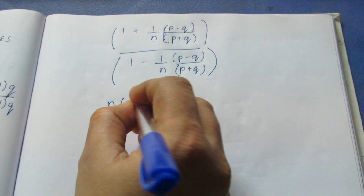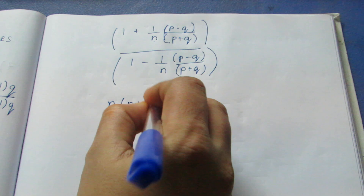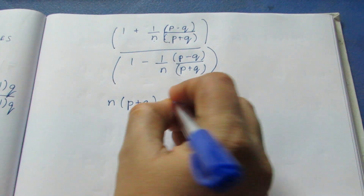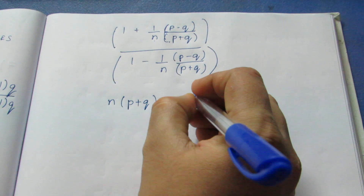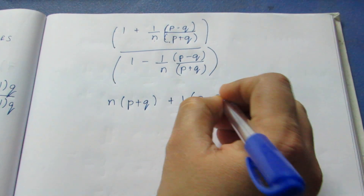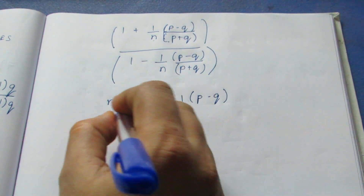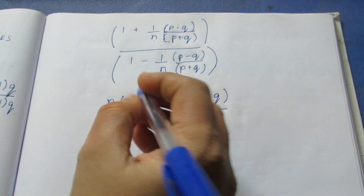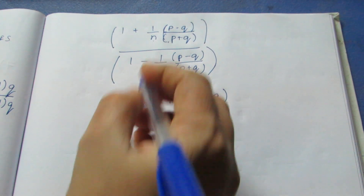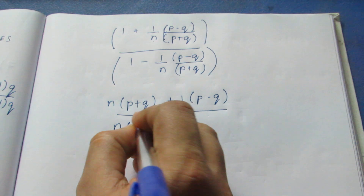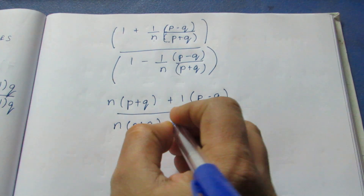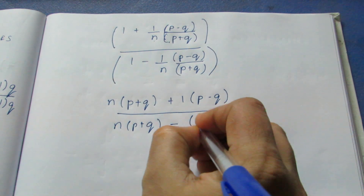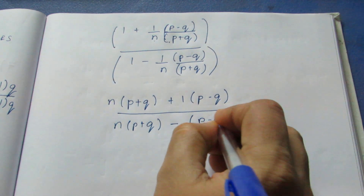The numerator becomes n into (p plus q) plus 1 into (p minus q). The denominator becomes n into (p plus q) minus 1 into (p minus q).